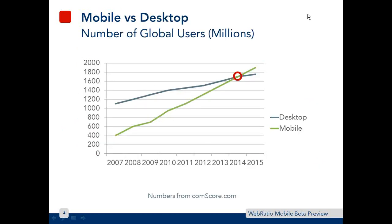This chart with numbers from comScore.com shows that in 2014 we have the most important crossover point for global users on mobile versus desktop platforms. In 2014, the number of global mobile application users in millions surpassed the number of desktop application users, and the difference between these two numbers will rise significantly — in 2015 the gap will be very high.